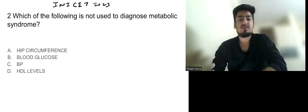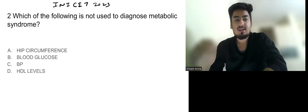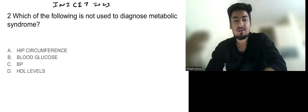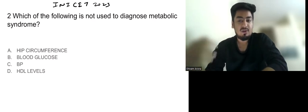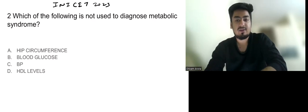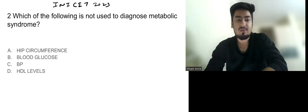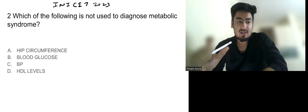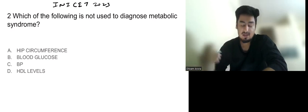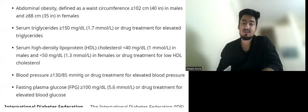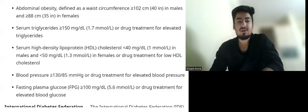The question asks: which of the following is not used to diagnose metabolic syndrome? Metabolic syndrome is a really important and hot topic. The criteria include blood glucose, blood pressure, HDL level, and hip circumference. Let us discuss the ATP criteria used to diagnose metabolic syndrome.